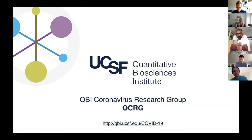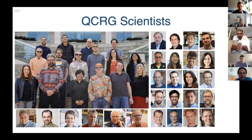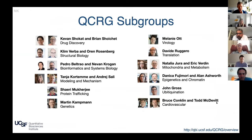Welcome to the third QCRG town hall. We've had two previous ones over the last several months. Today we're going to focus on the last four subgroups. Here's a picture of all the PIs at UCSF and QBI and beyond that are affiliated with QCRG, and here are the 12 subgroups. We've heard from eight of the subgroups so far and today we're going to be hearing about the last four.